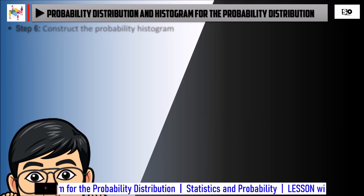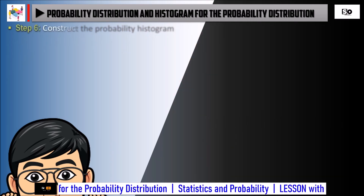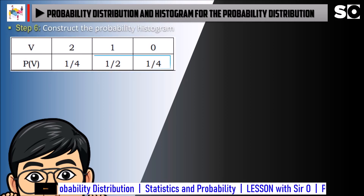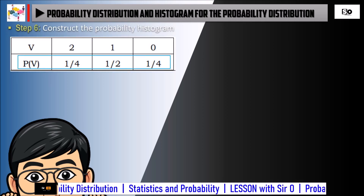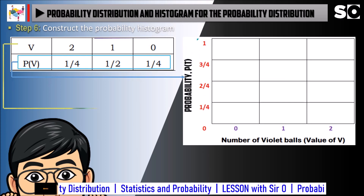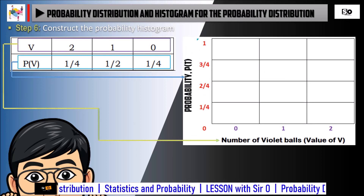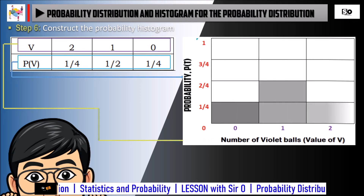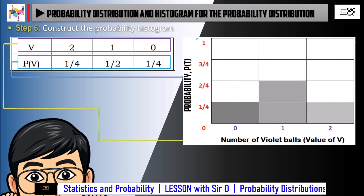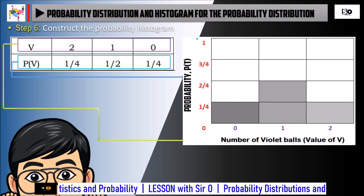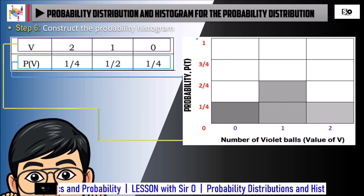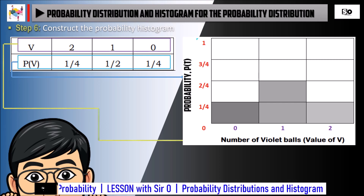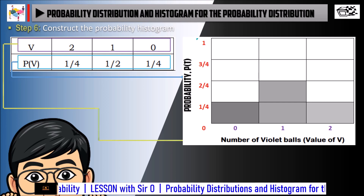Let us now proceed to the last step. Step 6: Construct the Probability Histogram. We are going to use the values in Step 5 and make a bar graph to construct the probability histogram of the given example. Here is now the final construction of the probability histogram. For more examples, open your module on page 13, Quick Checkpoint 15.